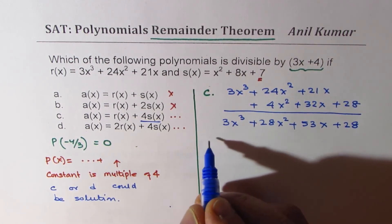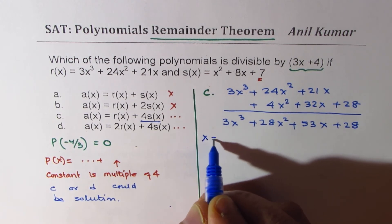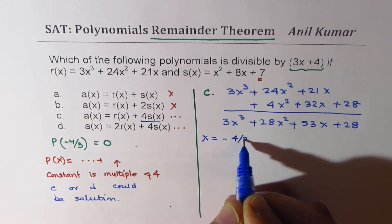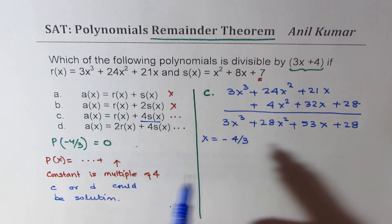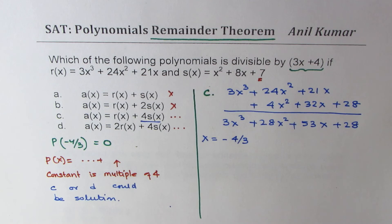Now you need to find the value of this function for x equals minus 4 over 3. If you get this as 0, then c is the answer. If not, then d is the option. You have no choice, correct? So that is how you can answer this question in minimum time.